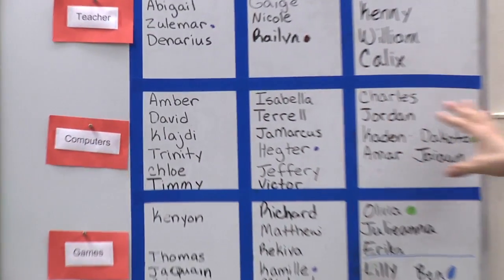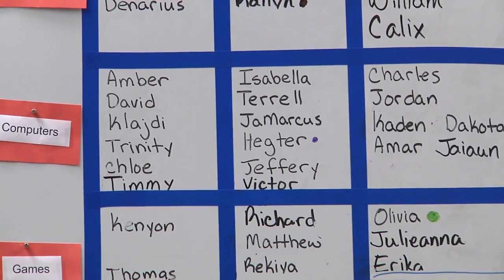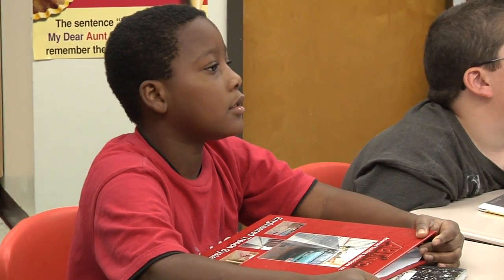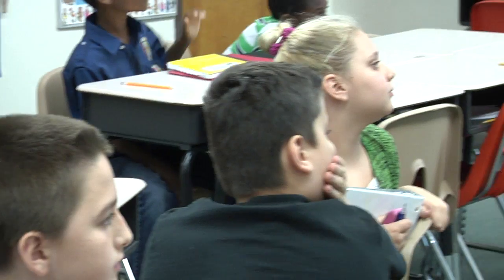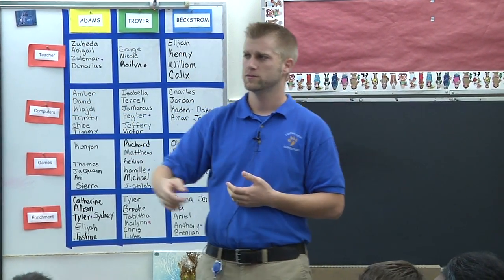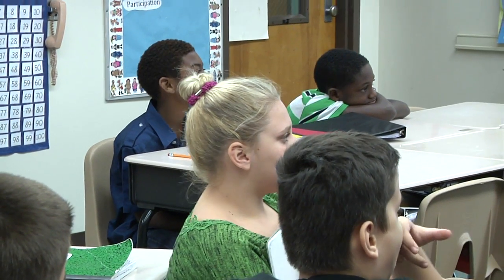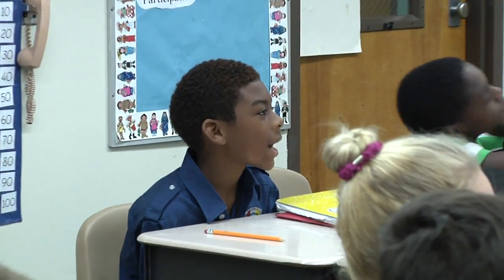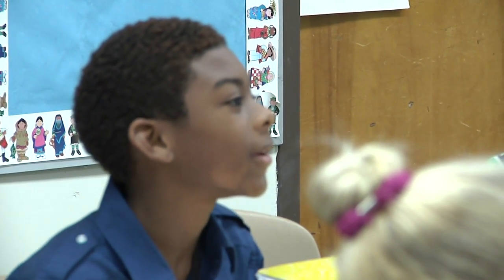In the computer center over here, what are we going to be doing? Kaden says I-Ready. Okay, we're going to be working on I-Ready. What happens if you finish the I-Ready lesson? We go to Reflex Math. And what skills are you working on in Reflex Math? We're going to be working on multiplication and division — basic facts, like 5 times 4 equals 20 and 20 divided by...